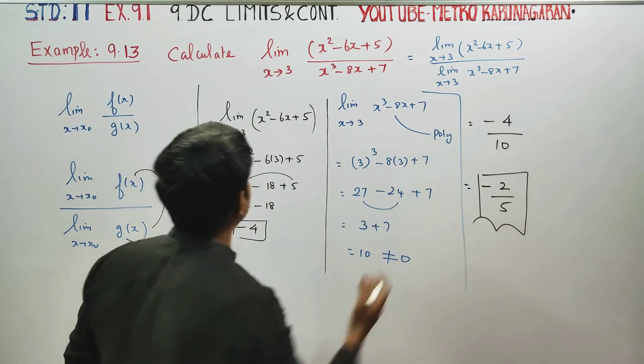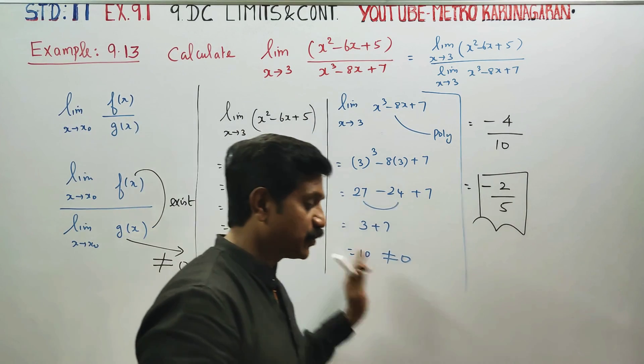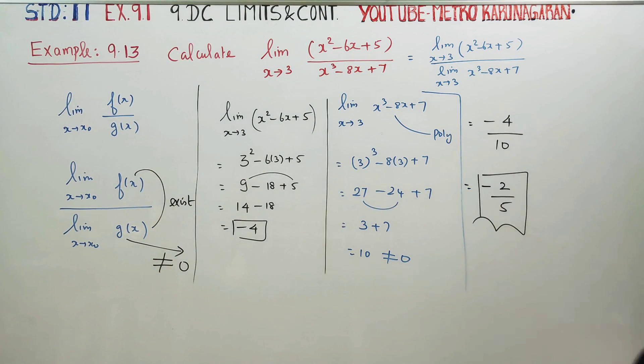In this sum, we apply the formula. First, find the numerator's limit separately. Then find the denominator's limit separately. The denominator's limit exists and is not equal to zero. So we can solve this sum. Okay, thank you.